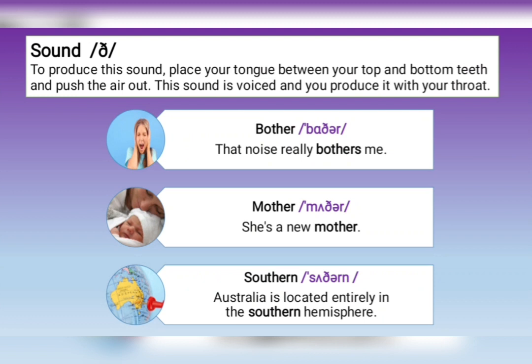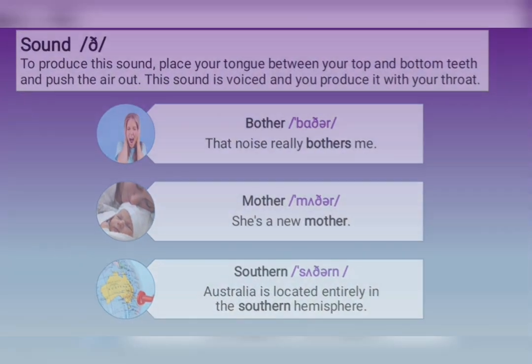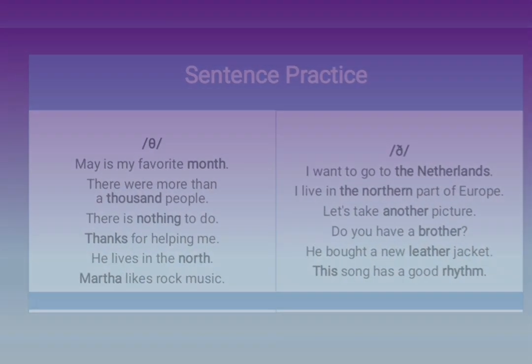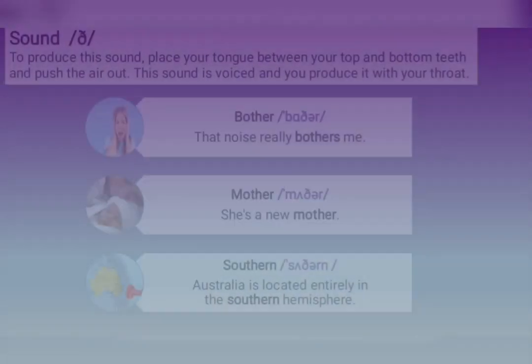Now the voiced 'th' sound. To produce it, we place the tongue between the top and bottom teeth and push the air out. This sound is voiced and you produce it with your throat. For example: 'bother' — that noise really bothers me.